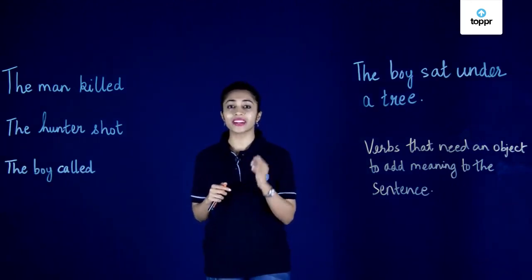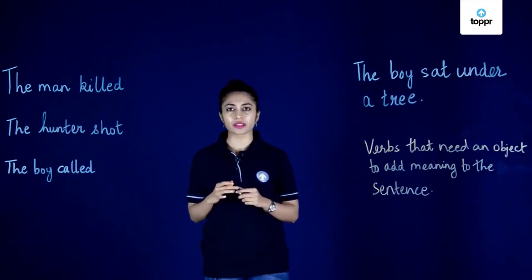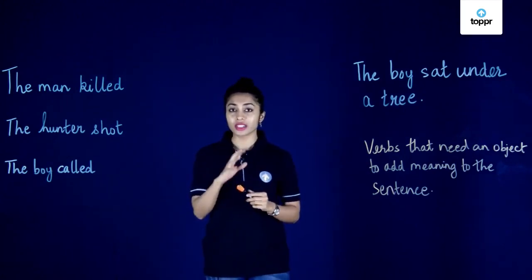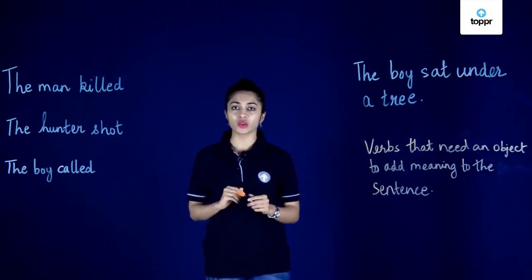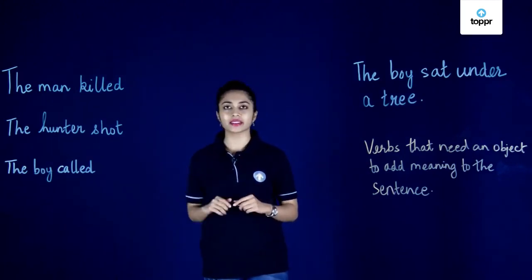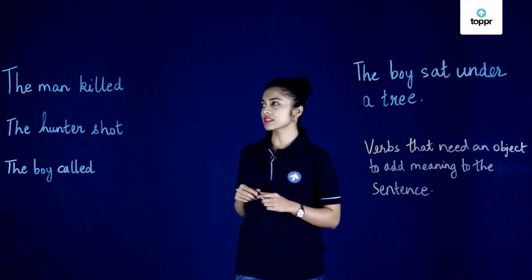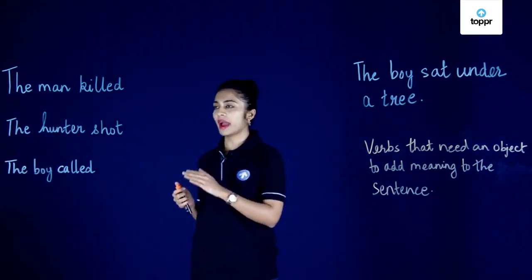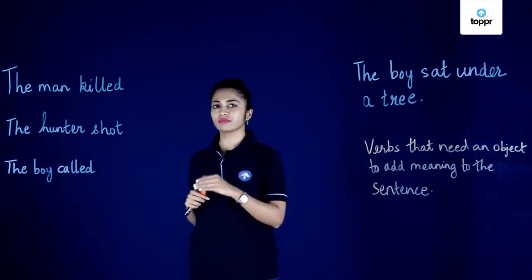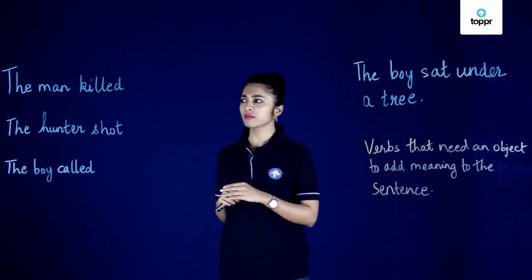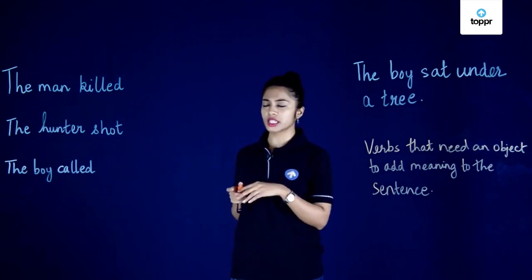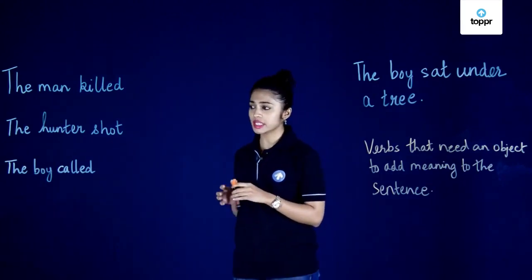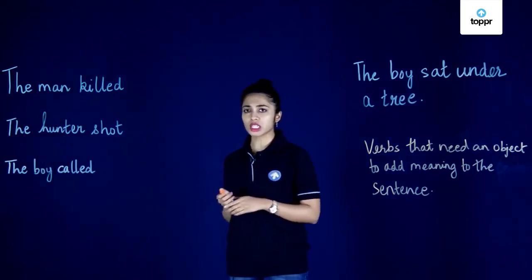First, we are going to look at transitive verbs. To understand transitive verbs better, let us look at these sentences here. The first sentence is 'the man killed,' the second sentence is 'the hunter shot,' and the third sentence is 'the boy called.'